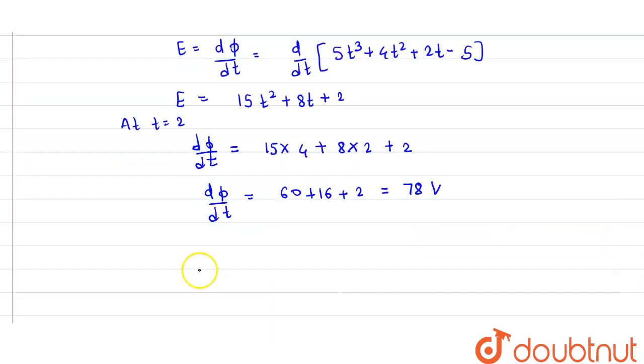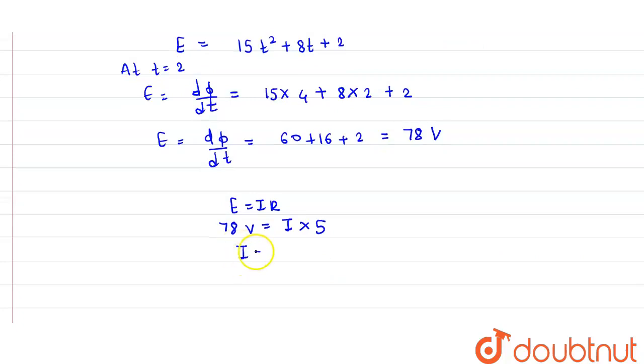Also we know the equation E = IR. Now this is E equal to dφ/dt. So we have E = 78 volts = I × 5Ω. So we have I = 78/5. This is equal to 15.6 Amperes. So we have induced current 15.6 Amperes.